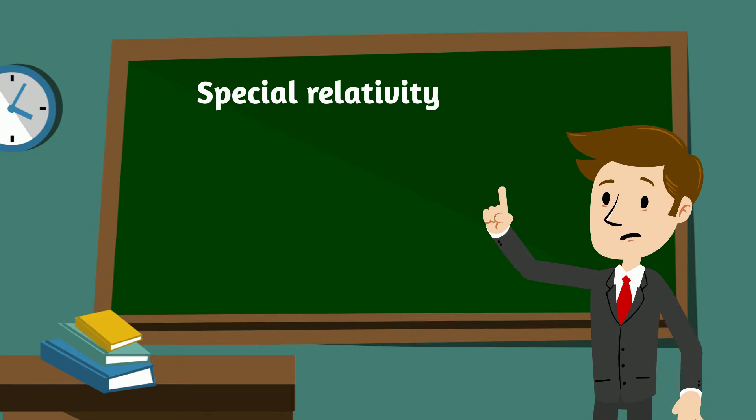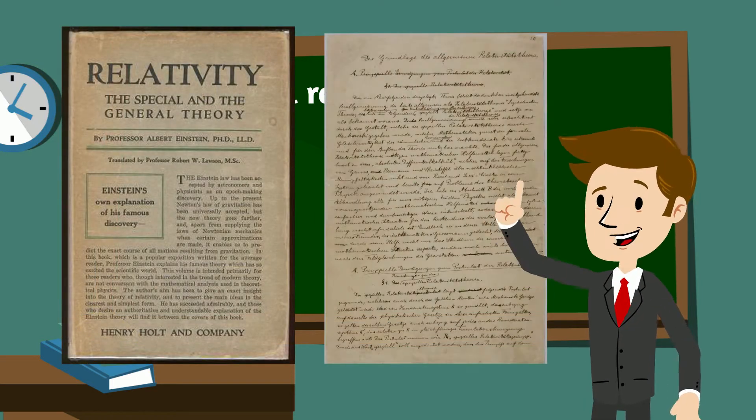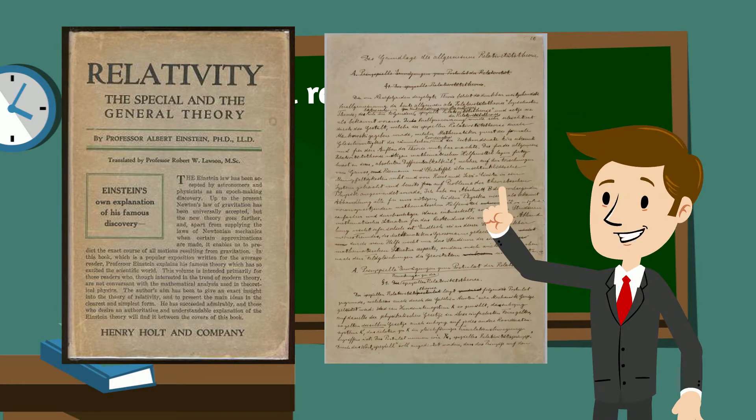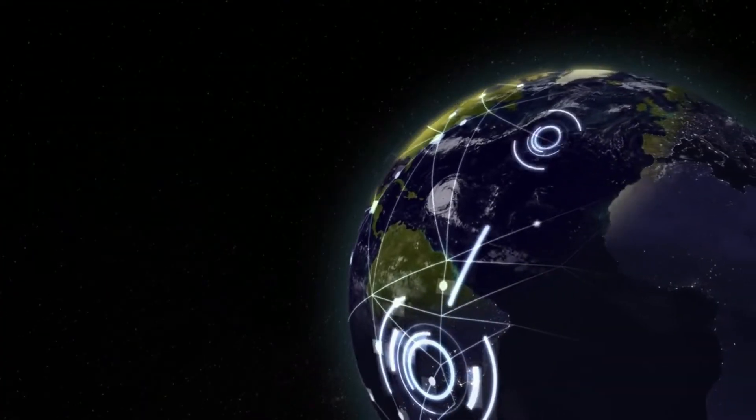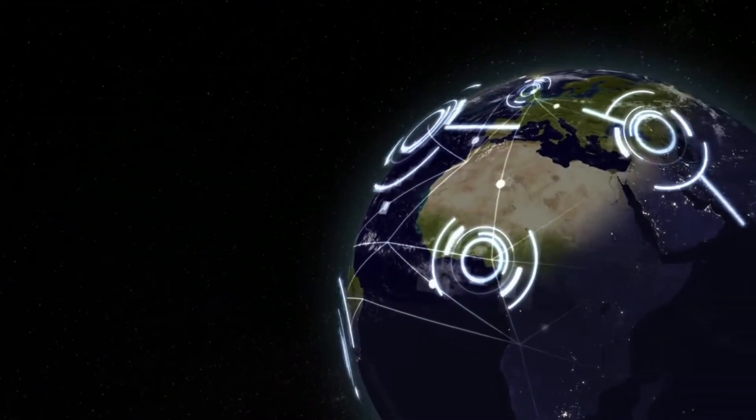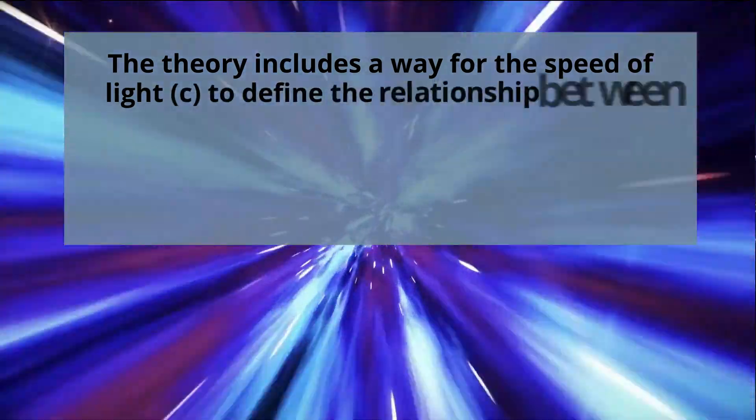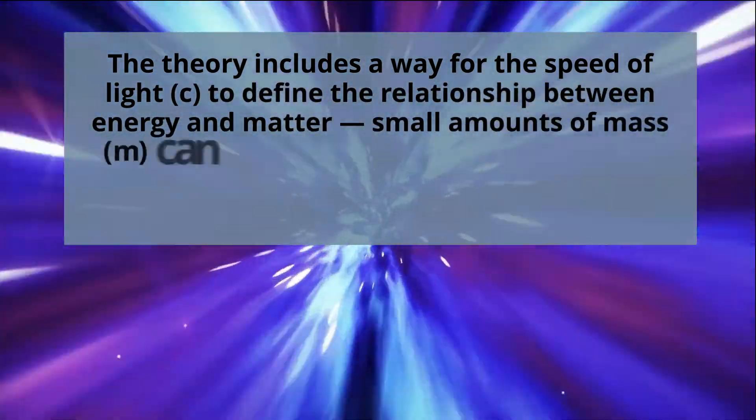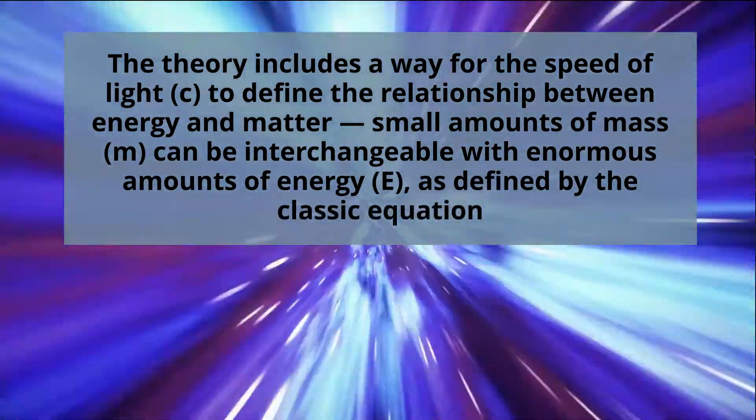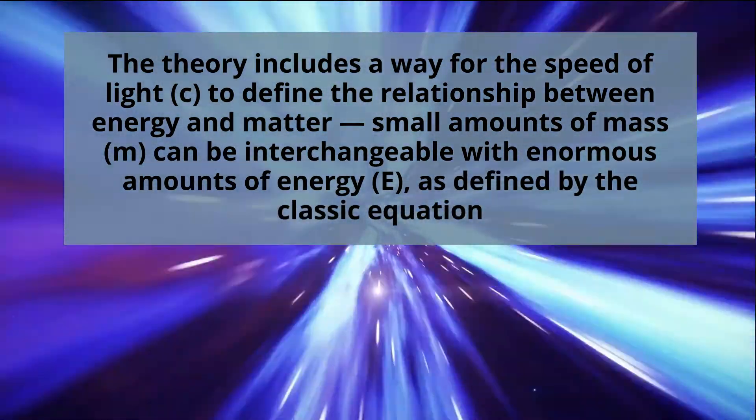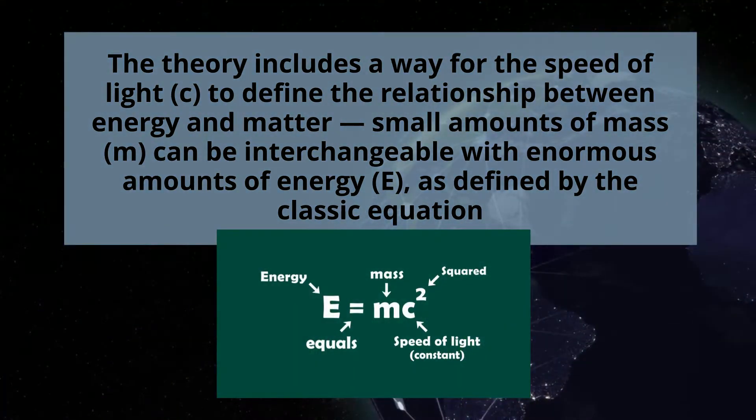Now, what is Special Relativity? Albert Einstein's 1905 theory of Special Relativity is one of the most important papers ever published in the field of physics. Special Relativity is an explanation of how speed affects mass, time and space. The theory includes a way for the speed of light, C, to define the relationship between energy and matter. Small amounts of mass, M, can be interchangeable with enormous amounts of energy, E, as defined by the classic equation E equals MC square.